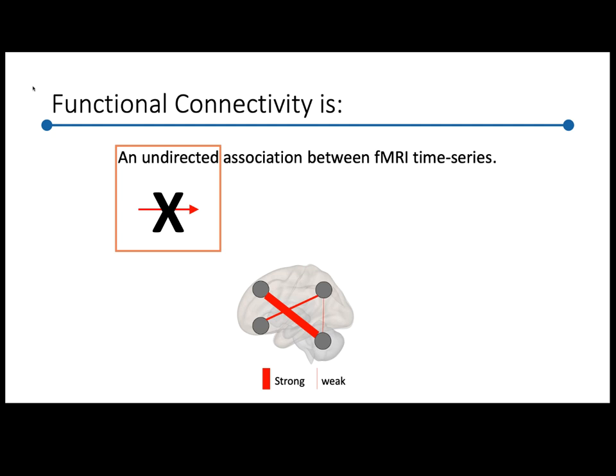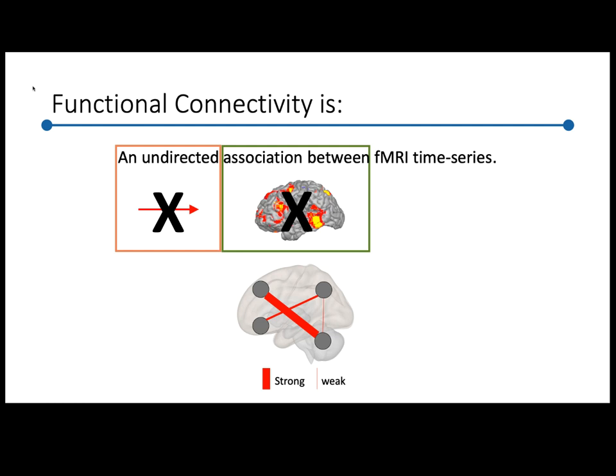Let's break down this definition. First, it's undirected — that means if we're looking at the functional connectivity between region A and region B, we can't tell that region A is causing region B to get excited, and we can't tell that region B is causing region A to get excited. Even if we know that's how neurons work — they have an input and output — functional connectivity doesn't tell us that. It only tells us that A and B are associated with each other. It's not a property of a single region; a pair of regions has functional connectivity.